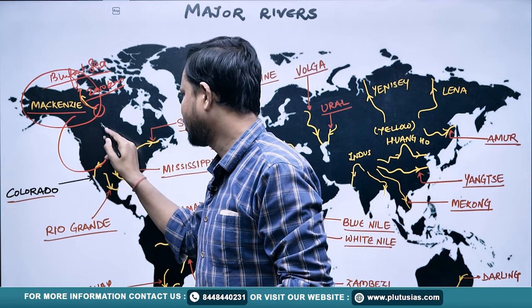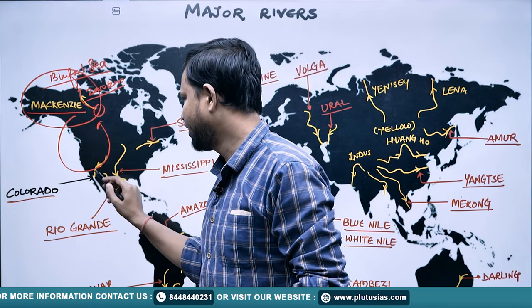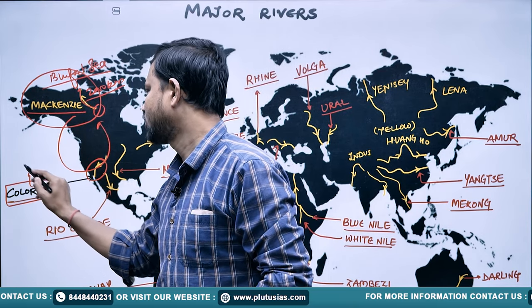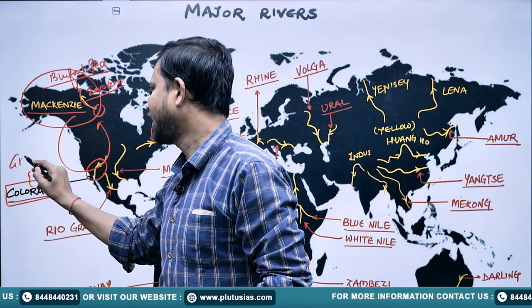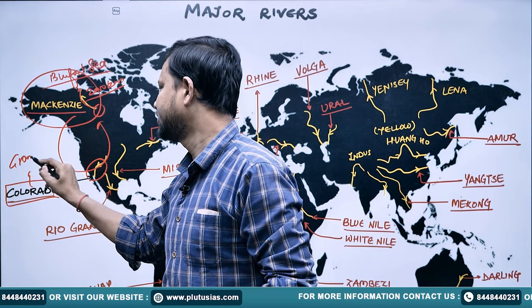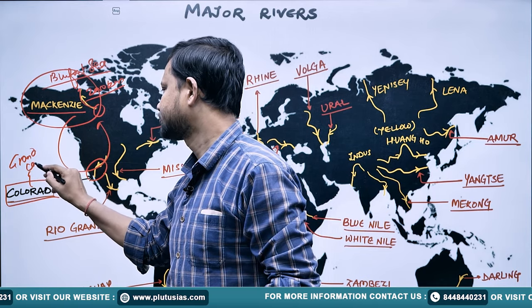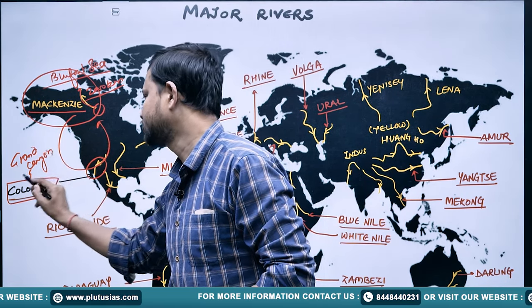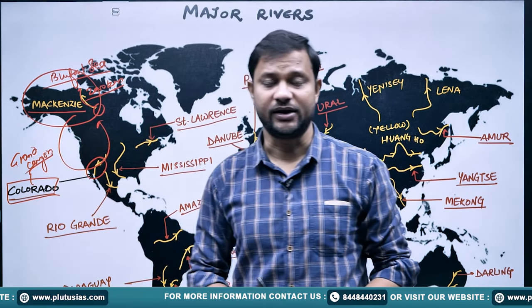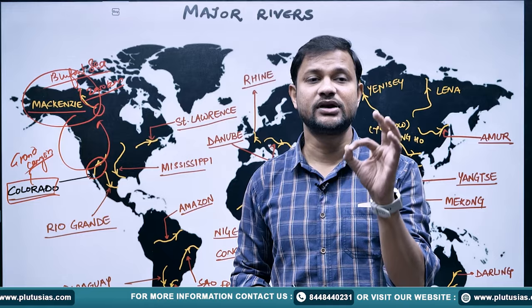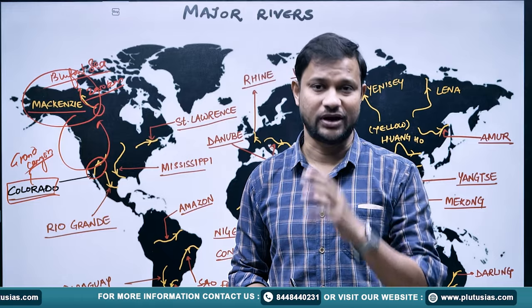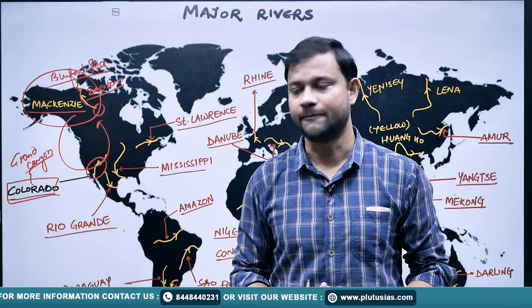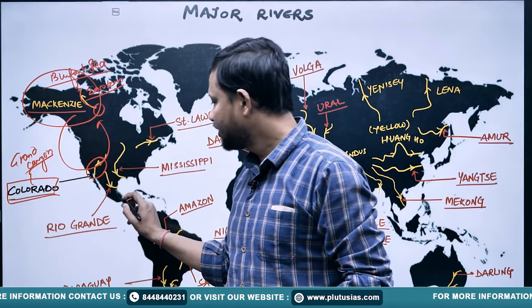Moving in an anti-clockwise direction, the Colorado River is very famous for the Grand Canyon — a tourist attraction and geomorphical erosional topography. It drains into the Gulf of California.